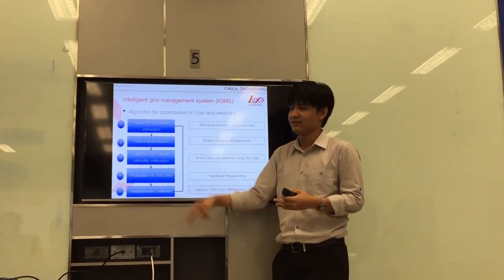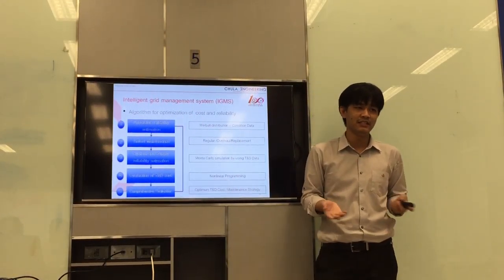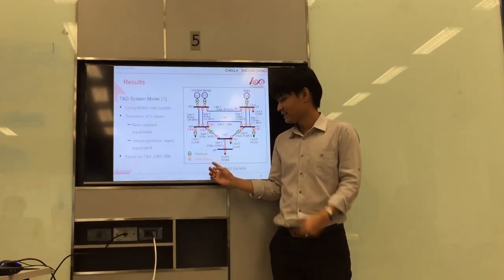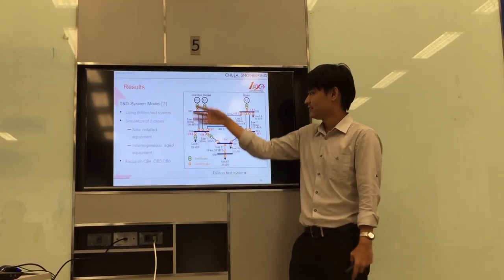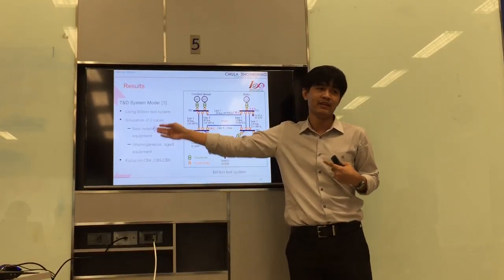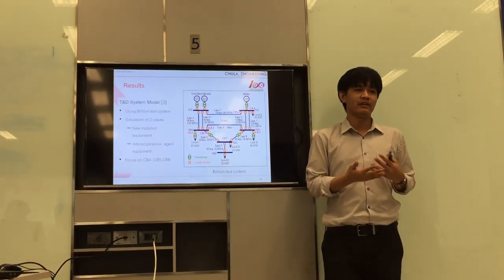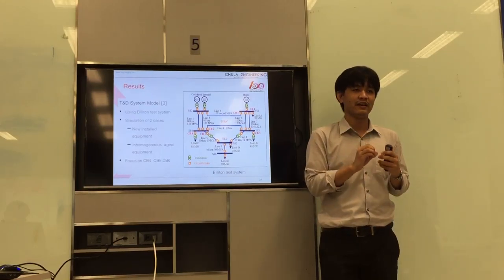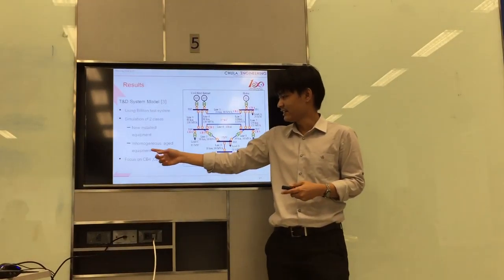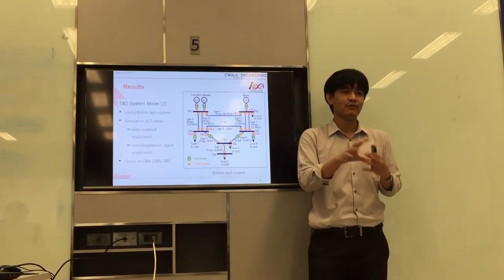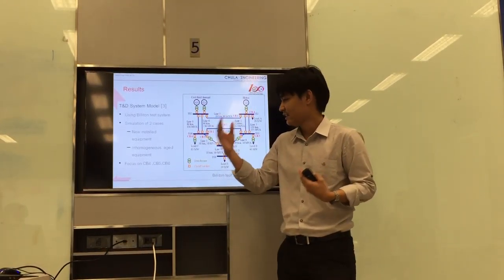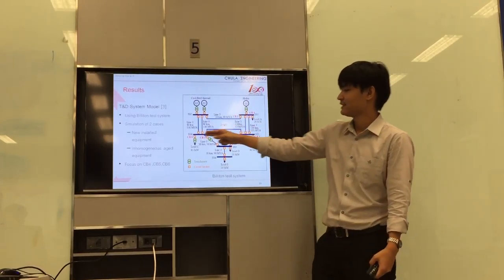To test this methodology, they use a system model called the IEEE test system, as shown in the picture on the right. There are simulations for two cases. The first case is new installation equipment, meaning the age of equipment in the system starts from zero years — you buy new assets. The second case is inhomogeneous equipment, where the assets have various ages already in operation. They want to analyze circuit breakers four, five, and six.